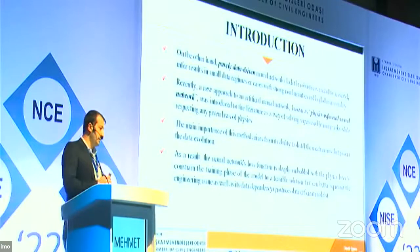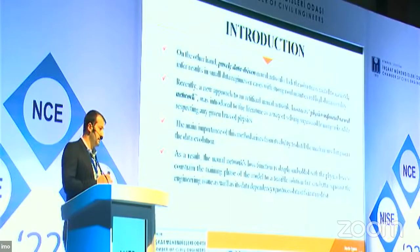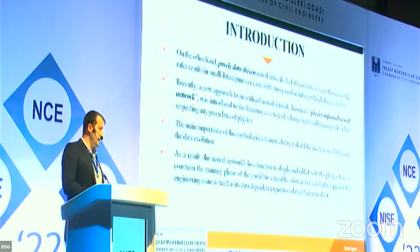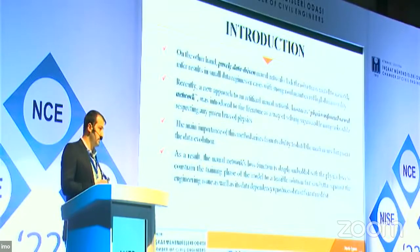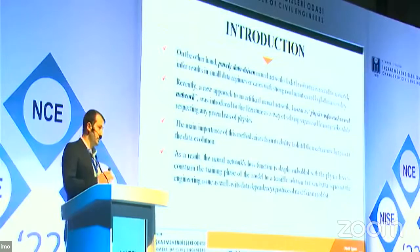The general impression about ANNs is that they save computational effort by offering closed-form solutions. When you develop a neural network solution, you can directly estimate the problem. However, purely data-driven neural networks lack the robustness needed to accurately produce results in small data regimes. Recently, physics-informed neural networks have been developed as a form of supervised learning that reduces the amount of data required to build a new model.